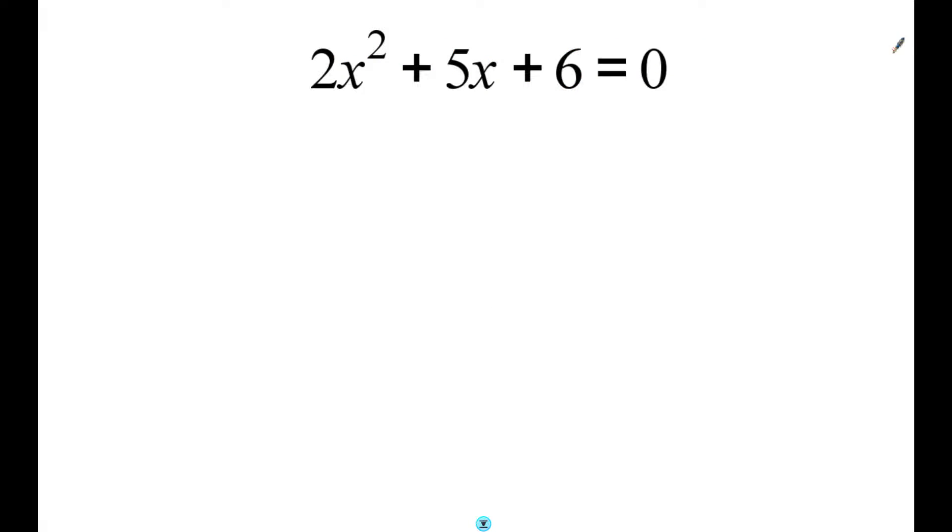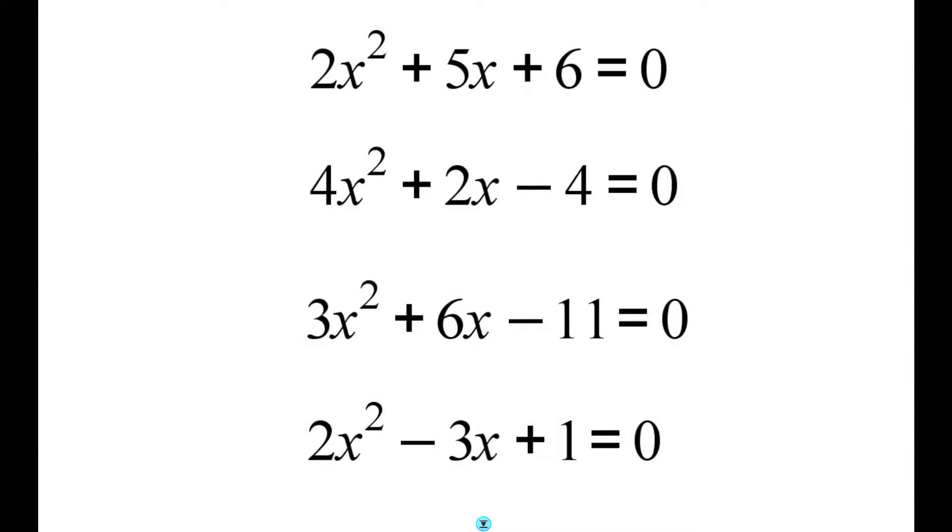So the first thing we're going to do is look back at a quadratic equation and just see what it is that they look like. Here's an example of a quadratic equation. Here's another one, 4x squared plus 2x minus 4 equals 0. Here's another one. And here's another one.